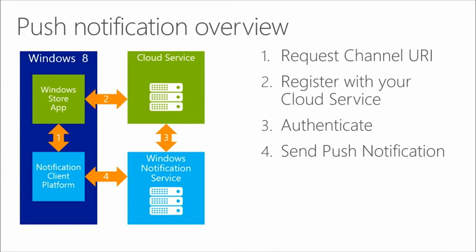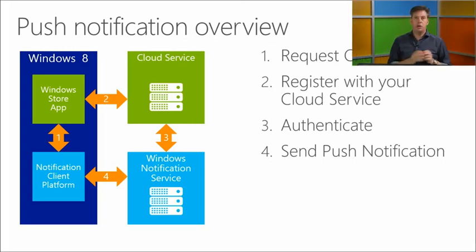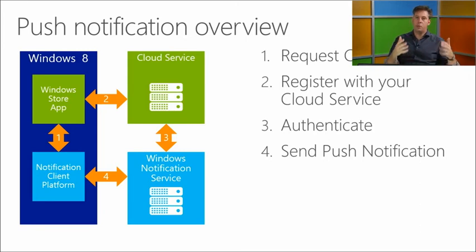How does push notification work? First, you request a channel URI from your app — a unique identifier for your channel. You store that URI with your cloud service, which knows the data and when to push it. The cloud service authenticates with the Windows Notification Service and pushes information through that channel to all Windows machines that have the app installed. Windows then shows that in the toast notification or in the tile.